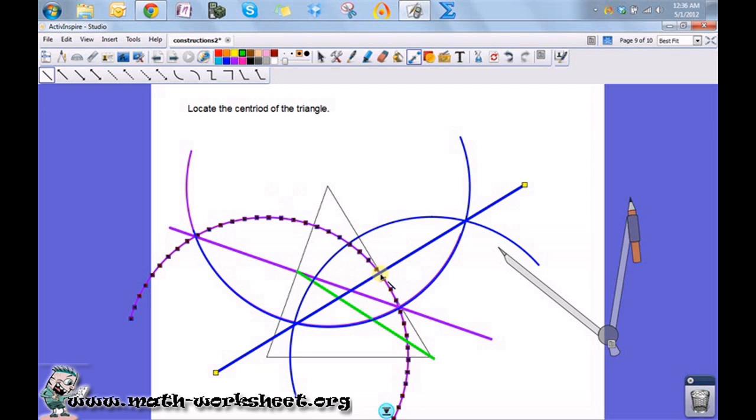If I draw a line segment from here to this angle, that is the median. So this point where the two green lines intersect is the centroid because it is where two of the medians intersect.